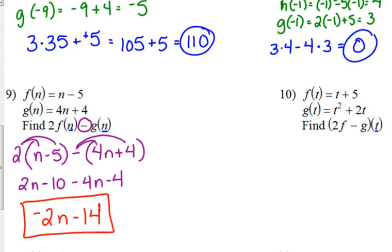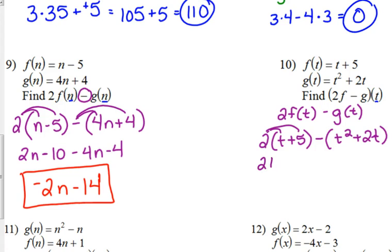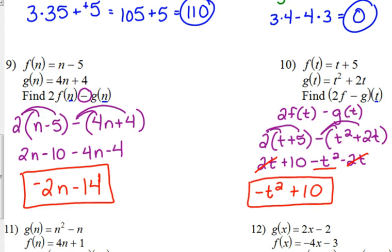These problems look really intimidating, but they're really not that bad. For 2f minus g of t — that's 2f of t minus g of t. 2 times my f function, t plus 5, minus parentheses my g function — that's what trips most people up if they don't distribute the negative. Distribute the 2: 2t plus 10. Distribute the negative: minus t squared minus 2t. Combine like terms and write in standard form: negative t squared comes first, 2t minus 2t goes away, and then plus 10 on the end.